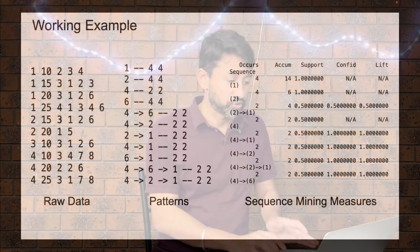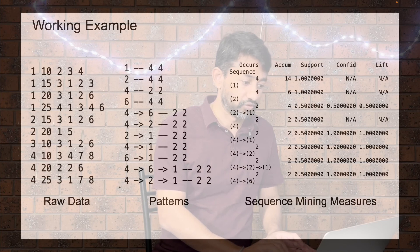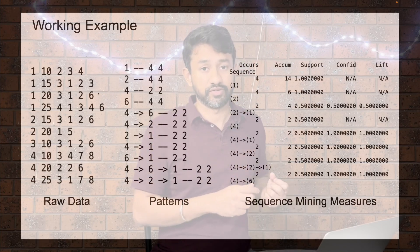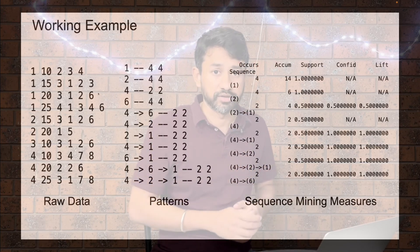Any dataset can be transformed into this format. If we have a sequence ID equivalent to a customer ID, an event ID as a timestamp — day of a month or time of a particular day — and the various items that happen at that point in time, that is good enough to implement sequential pattern analysis and identify various sequential patterns.